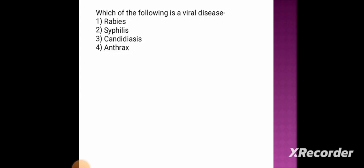The first question: which of the following is a viral disease? Option 1: rabies. Option 2: syphilis. Option 3: candidiasis. Option 4: anthrax. The correct answer is option 1, rabies.